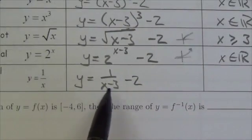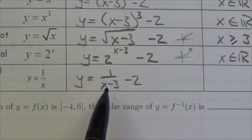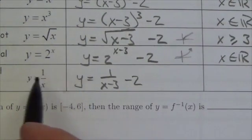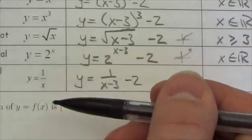I'm moving this thing to the right 3 and down 2. Now moving it to the right 3 won't affect the horizontal asymptote but it will affect the vertical asymptote.